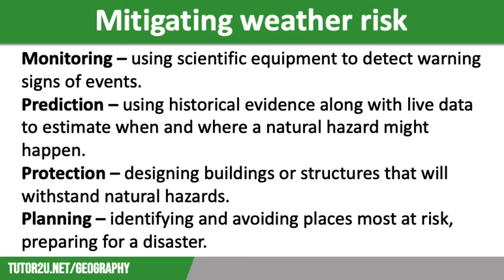Firstly, we have monitoring, which is using scientific equipment to detect warning signs of events. We then have prediction, which uses historical evidence along with live data to estimate when and where a weather hazard might happen. We then have protection, which is designing buildings or structures that will withstand weather hazards. Finally, we have planning, which identifies and avoids places most at risk and helps people prepare for a disaster. It is useful to remember these as MP3.